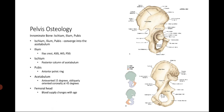First, we'll be discussing the pelvis. For pelvis osteology, it's composed of two innominate bones. Each innominate bone is composed of the ischium, ileum, and the pubis. All three structures converge into the acetabulum. For the ileum, the important landmarks to note would be the iliac crest, which is where we get iliac crest bone grafts — important for orthopedics.